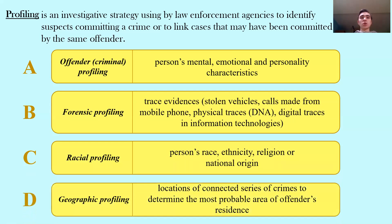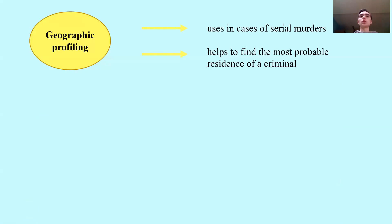The last one I've chosen is geographic profiling, which analyzes locations of connected series of crimes to determine the most probable area of the offender's residence. It is usually used in cases of serial murders, and it helps to find the most probable residence of the criminal.